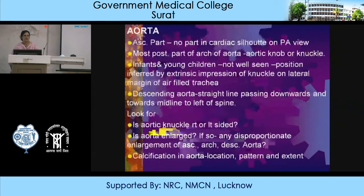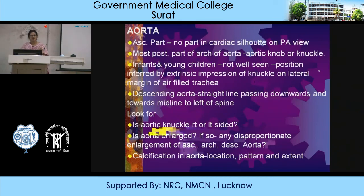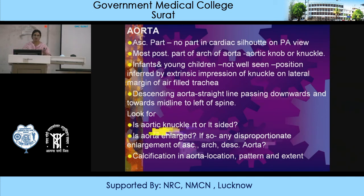The ascending aorta does not form any part of the cardiac silhouette on the PA view. The most posterior part of the arch of the aorta forms the aortic knob or knuckle. In infants and young children, the aortic knuckle is not well seen and its position is inferred by the extrinsic impression on the lateral margin of the trachea. The descending aorta is a straight line passing downwards to the left of the spine. You should look whether the aortic knuckle is right or left sided, whether the aorta is enlarged, and check for any disproportionate enlargement of the ascending aorta, arch, or descending aorta, as well as calcifications.